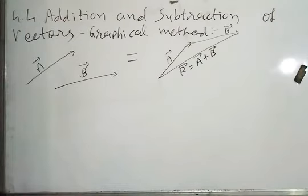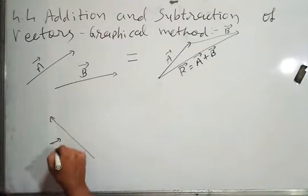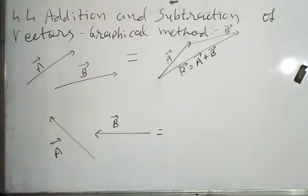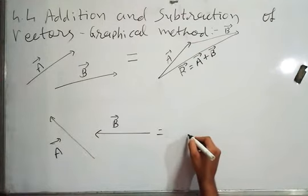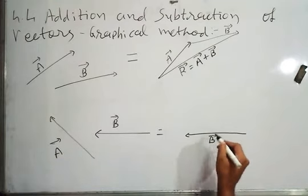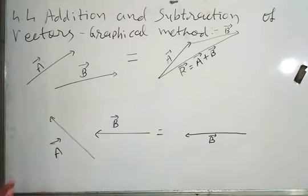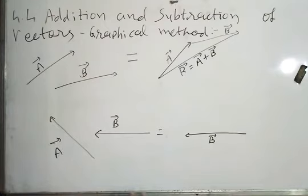Now similarly, for a second case: if vector A is in this direction and vector B is in the left-hand side direction, I can also put A on B using the graphical method. First I have to draw vector B as it is. Whenever we put any vector on the tail or head of another vector, we must make sure that the direction of the vector we are placing does not change.